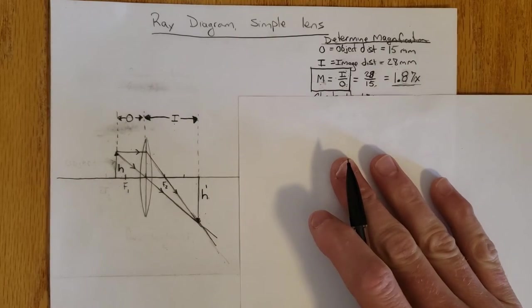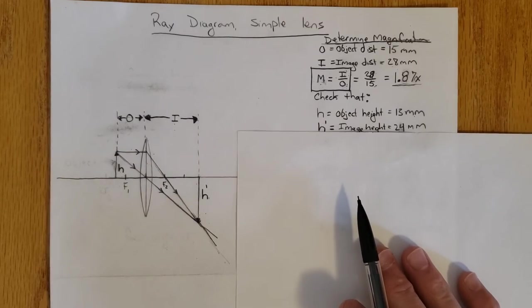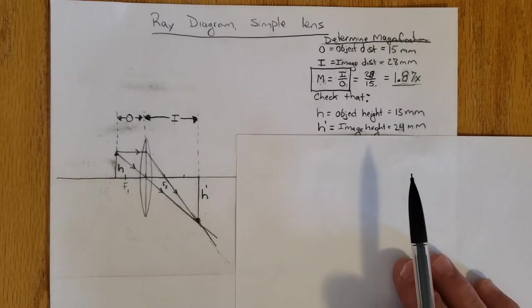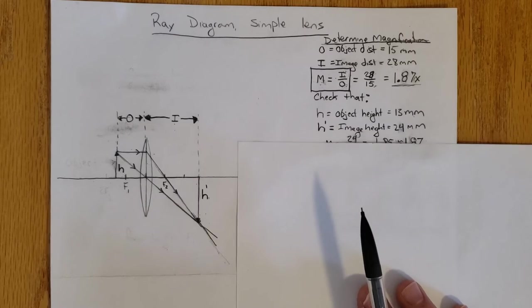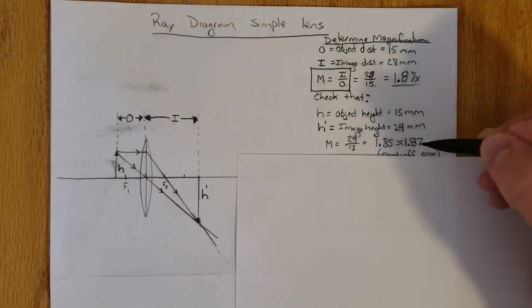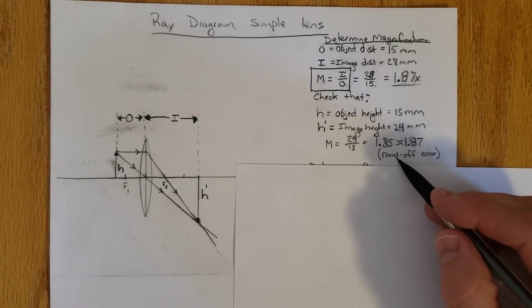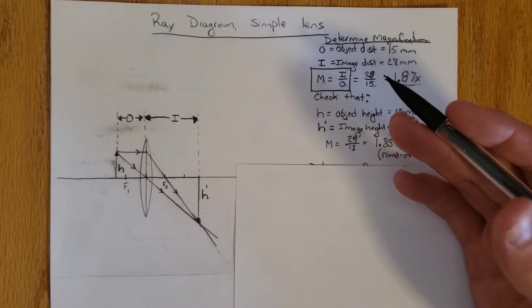We can check that by measuring again. The object height we knew to be 13 millimeters. This new image height I have measured to be 24 millimeters. When we do that, 24 divided by 13, I get 1.85, which is about 1.87.